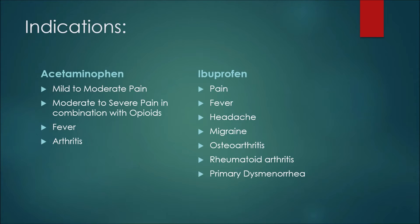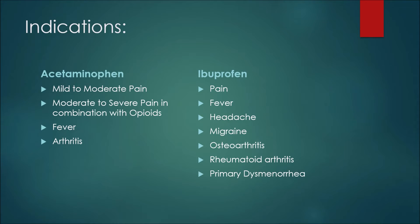Now, what about indications, or reasons we would give these medications to a patient? For acetaminophen or Tylenol, we may see it used for mild to moderate pain. It can also be used for moderate to severe pain if used with opioids. It can be used to treat fever as well as arthritis.